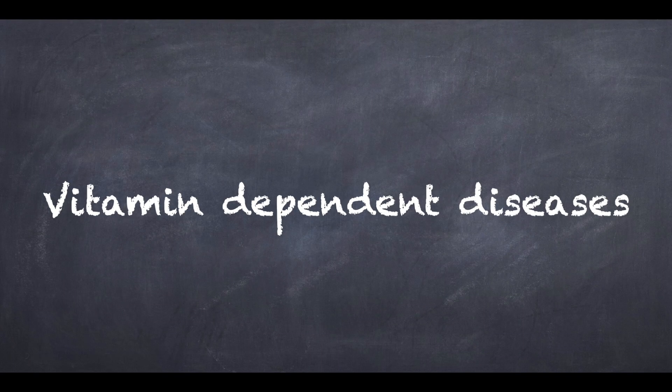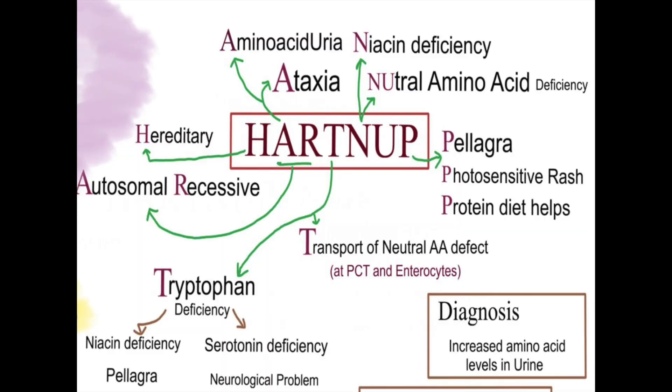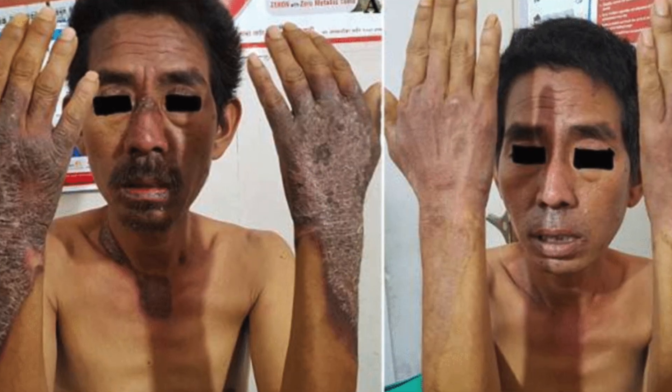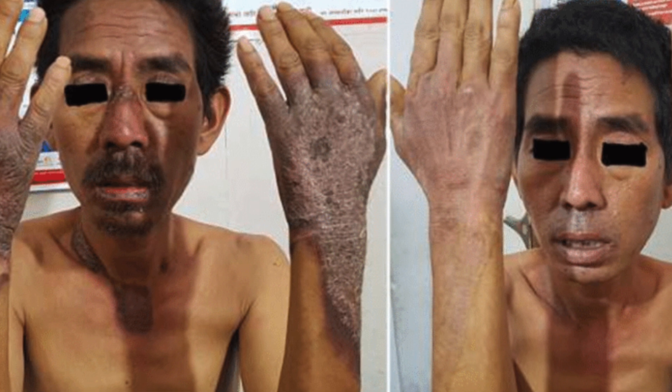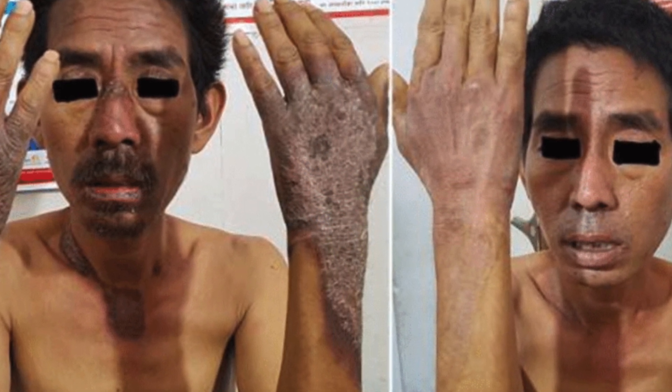Then we have a group called vitamin-dependent diseases. There are many, but I will just take one example — so-called Hartnup's disease. This is a genetically determined disorder of tryptophan metabolism, as a result of which enzyme deficiency, nicotinic acid is not formed. So these patients develop classical pellagra symptoms on the skin — rough skin, photosensitivity, cerebellar ataxia, and all other symptoms you see in classical deficiency pellagra. Simply replacing the nicotinic acid, 50 mg a day, will produce a dramatic improvement in the skin lesions as well as in the other neurological manifestations.